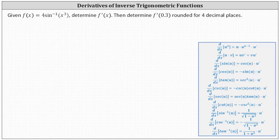We're given f of x equals four inverse sine of x cubed and asked to determine the derivative function f prime of x, then determine f prime of 0.3 rounded to four decimal places.